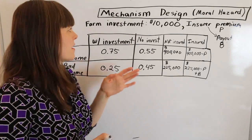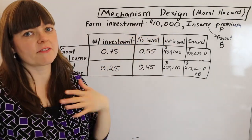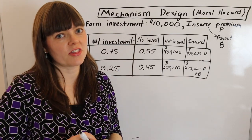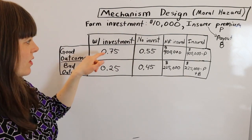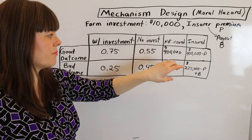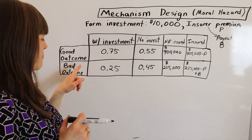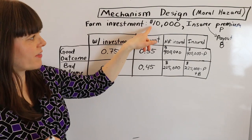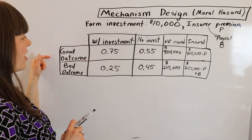Here's the basic setup. We have a farmer who has the option to make a $10,000 investment in technology for their farm that increases the likelihood of a good farm outcome. There are two possible outcomes: a good outcome yields $900,000 for the farmer — that's in the uninsured column, specifically $9,000 just from crops — and a bad outcome yields only $225,000.